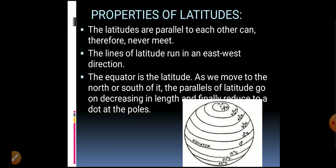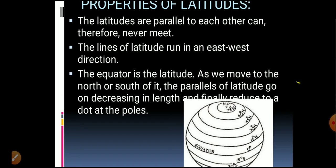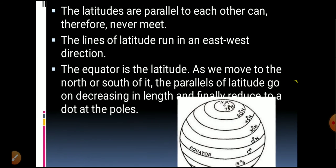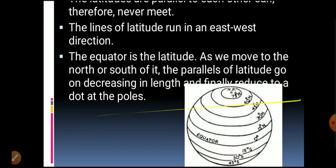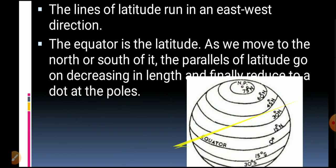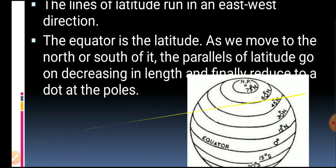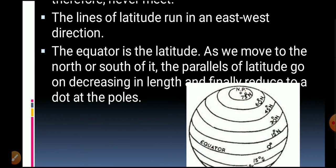Now let's learn about some properties of latitude. Latitudes are parallel to each other and they never meet at any point. They run from east to west. The equator is also a latitude, and as we move towards the north or south of it, the length of each latitude keeps on decreasing.